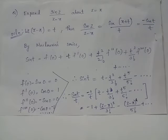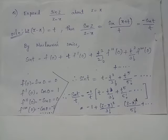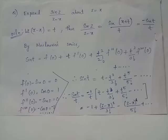We apply the Maclaurin series to the function sin(t), considered as f(t). The Maclaurin series gives: f(t) = f(0) + t·f'(0) + (t²/2!)·f''(0) + (t³/3!)·f'''(0) + etc.